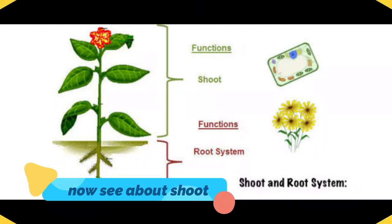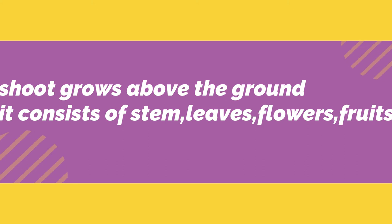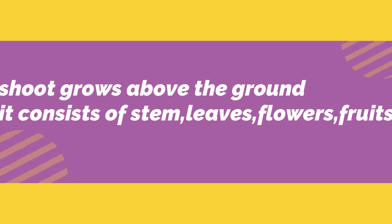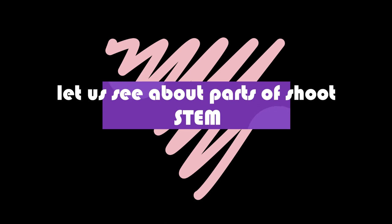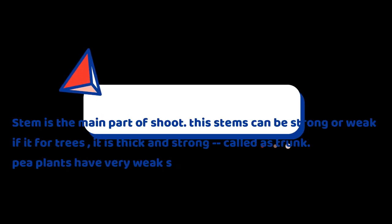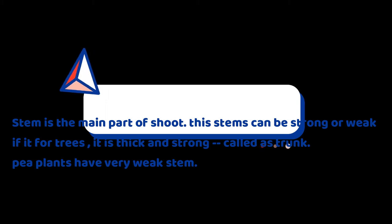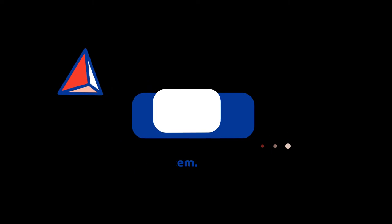Now it is time for shoot system. Shoot system is above the ground. It consists of stem, leaves, flowers, and fruits. Stem is the main part of the shoot. These stems can be strong or weak. For trees, stems are strong and thick. Plants like pea have very weak stems.